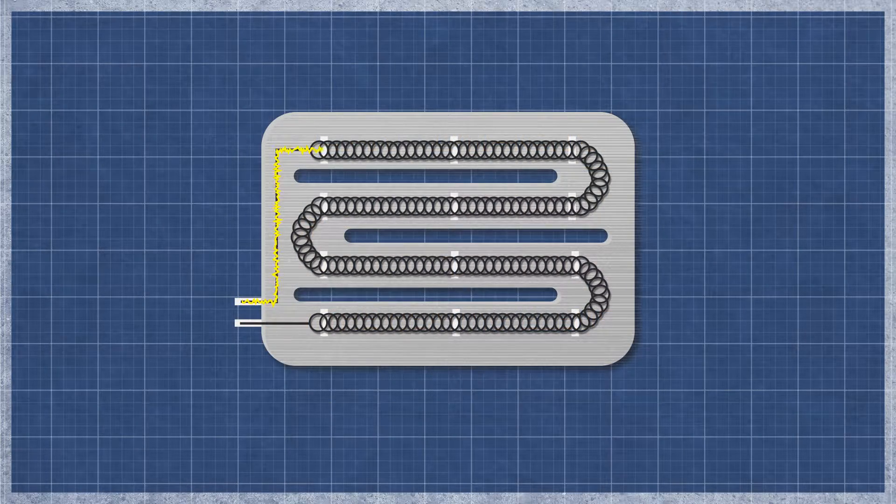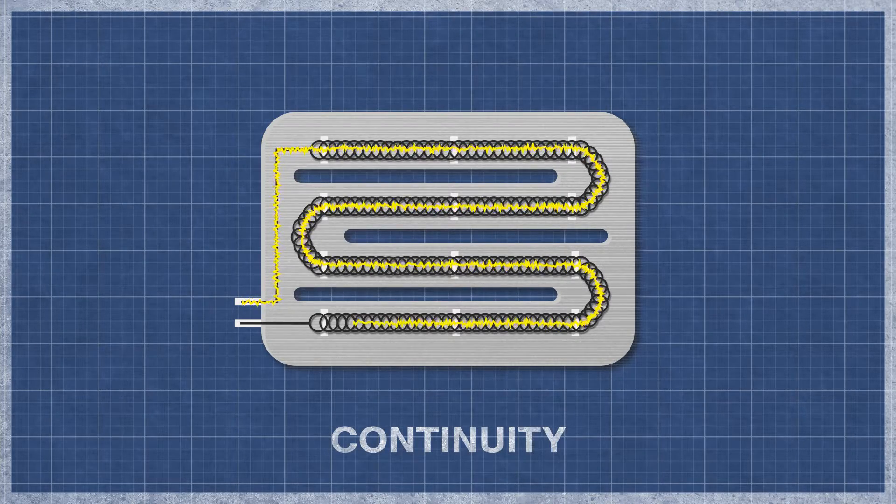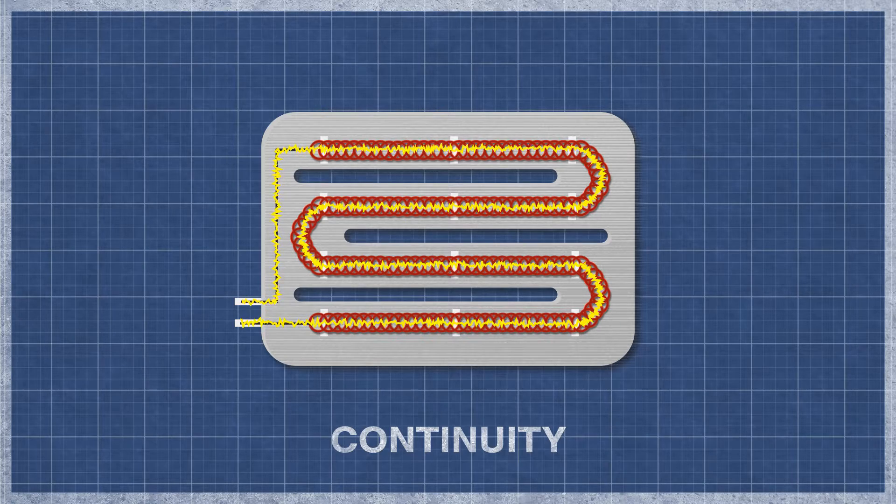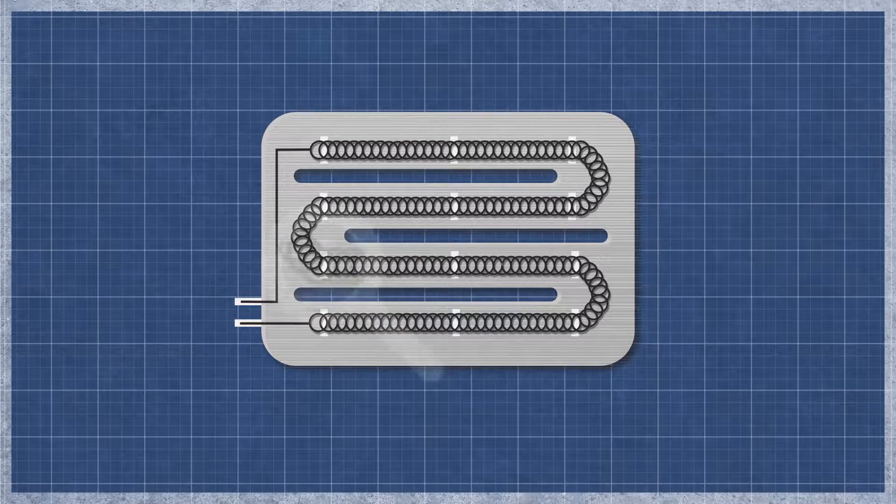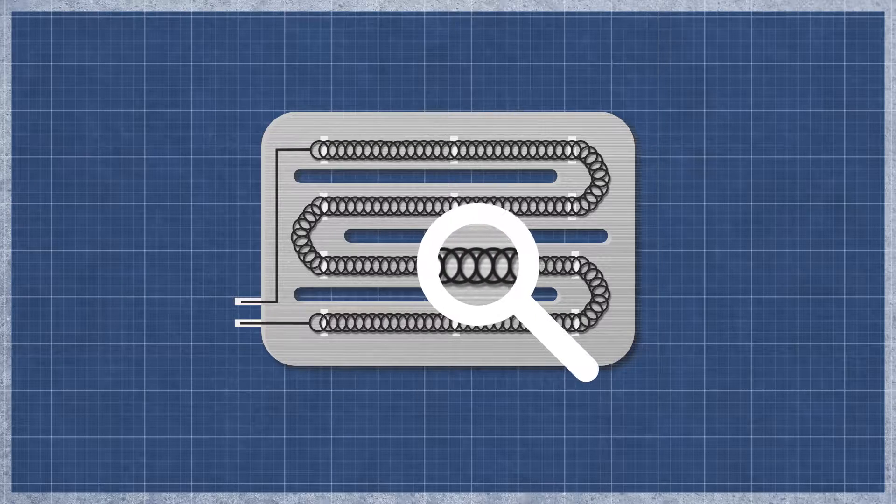A dryer heater works similarly to an incandescent light bulb. As electricity flows through the element, the resistance in the material generates heat. The element can burn out over time with normal use and may appear singed or cracked. This can be difficult to see as even a small break can cause an element to fail.